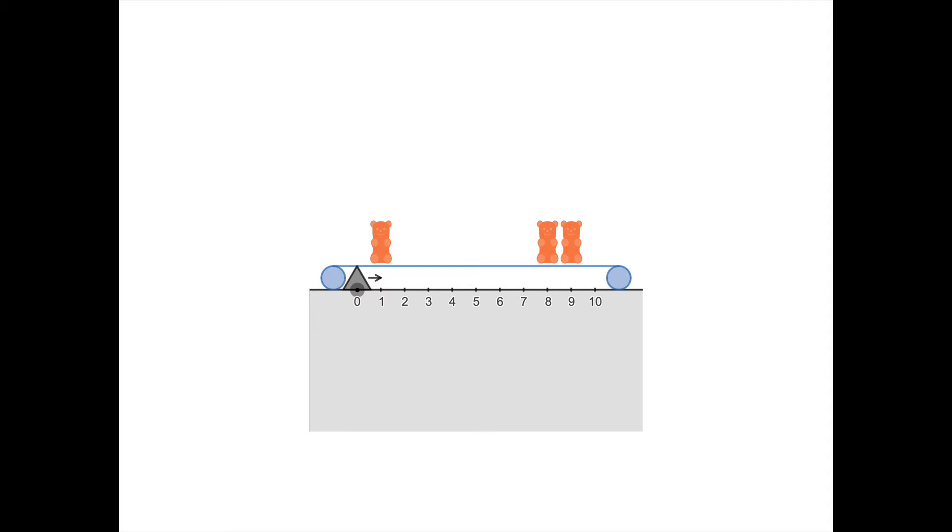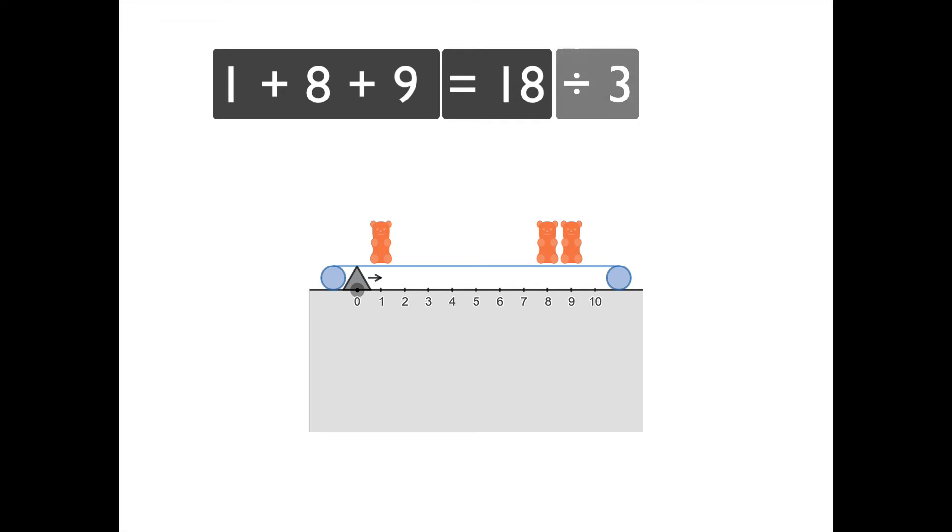On slide number four we were told to find the balance point, and you can do this by experimenting, but for more complicated ones you can also do it by calculating the mean. The mean of 1, 8, and 9 is found by adding 1 + 8 + 9 and then dividing by 3 because there are three data items, and we get 6. So the bears will be balanced with 6.